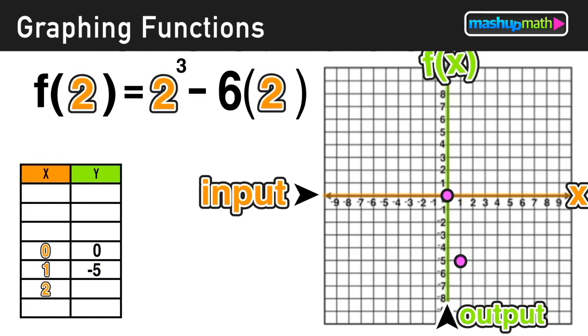We can continue this process for inputting a value of 2. So when x is 2 in the original function, when we evaluate, we get an output of -4. That's 2³ - 6 times 2, and (2, -4) is another point that is on the graph of our function.